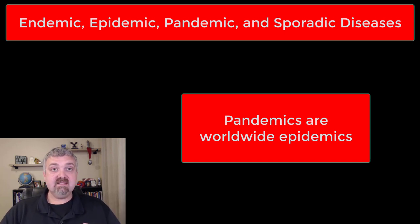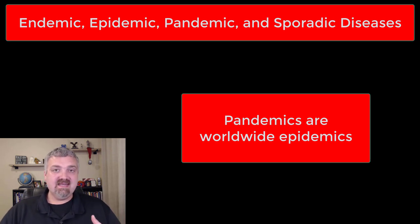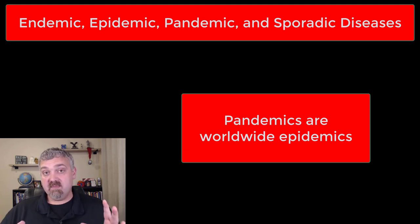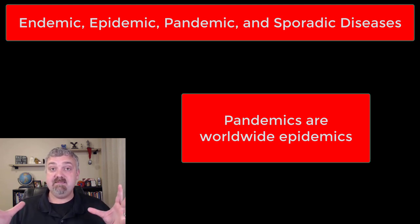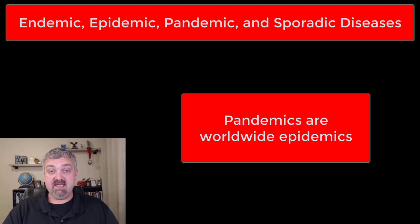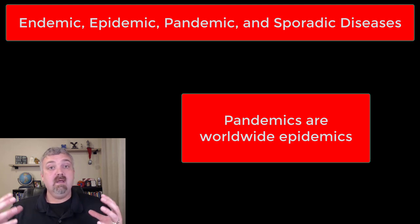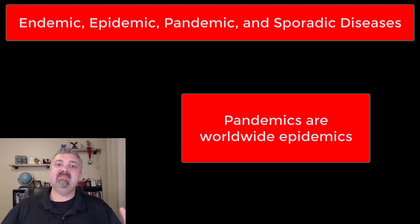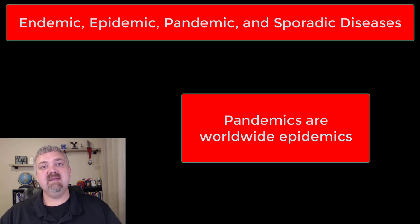So to recap: sporadic diseases just pop up sporadically, as the name implies. Endemic diseases are constantly present. Epidemic diseases show an explosion in number of a disease in a given area — and that could be a continent or a city. Pandemic diseases would be worldwide epidemics. I hope this helps. Have a wonderful day. Be blessed.